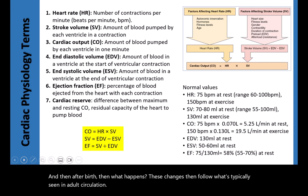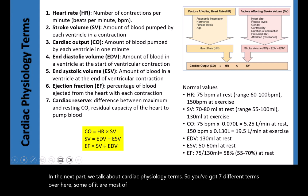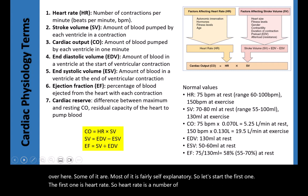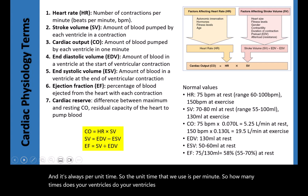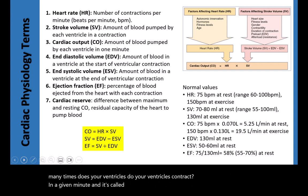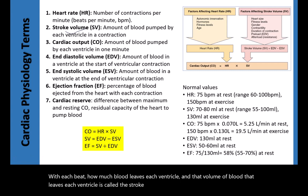Next we talk about cardiac physiology terms. Heart rate is the number of times the ventricles contract per minute, measured in beats per minute. With each beat, the volume of blood leaving each ventricle is called the stroke volume. Multiplying heart rate and stroke volume gives the cardiac output, which is defined as the amount of blood pumped out by each ventricle in one minute.